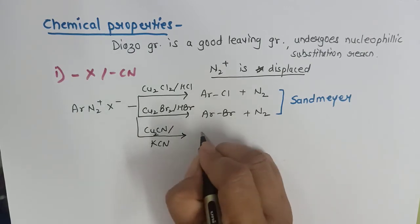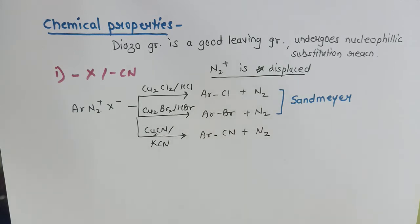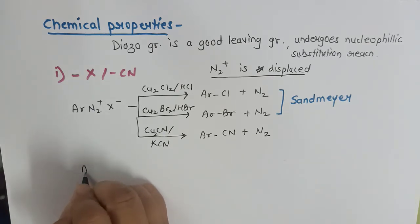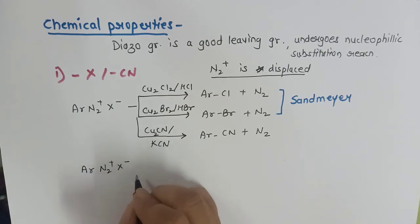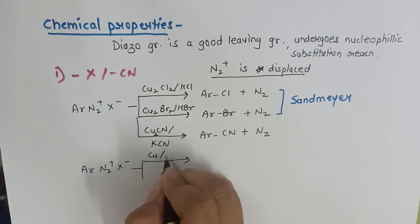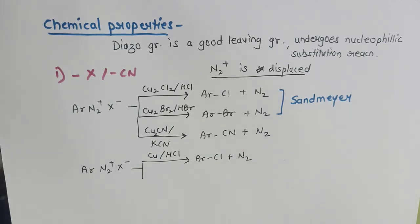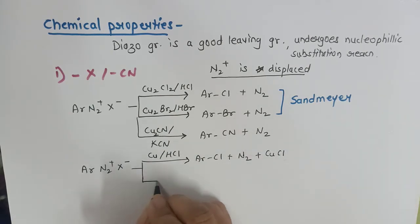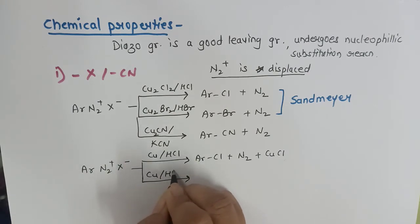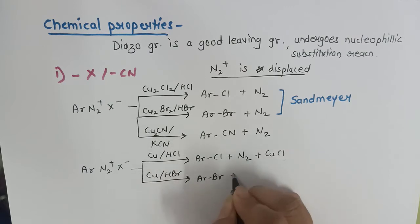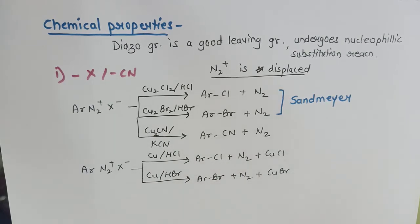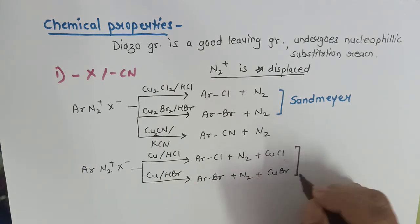For replacement by cyanide, diazonium chloride can be reacted with cuprous cyanide or potassium cyanide to get cyanobenzene. Additionally, BDC treated with copper metal in presence of HCl gives chlorobenzene along with nitrogen and copper chloride; similarly with HBr it gives bromobenzene, nitrogen, and copper bromide. This reaction — studied just after Sandmeyer reaction in the chapter on haloalkanes and haloarenes — is the Gattermann reaction.